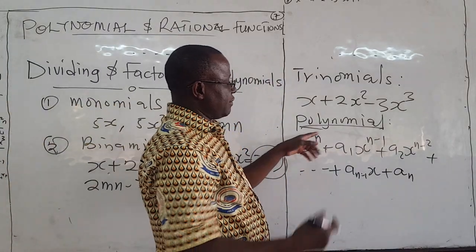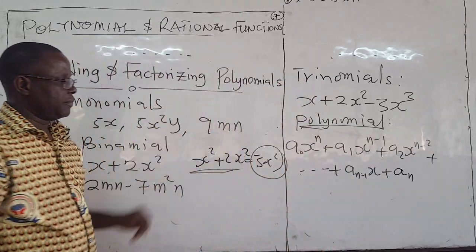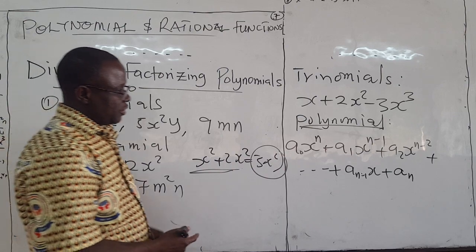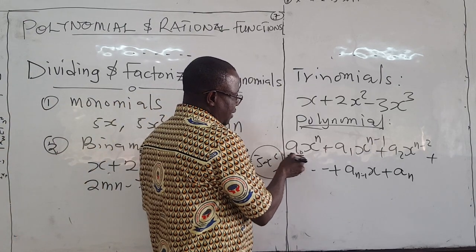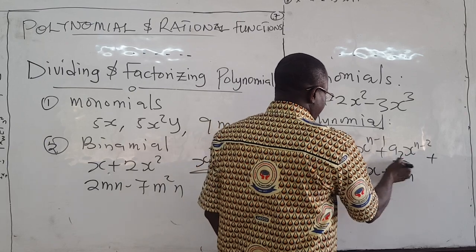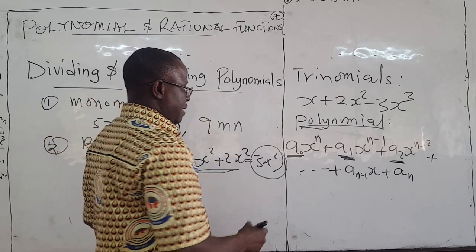You have n terms. It's a general form of all these other ones. These are the coefficients, the constants there, of the polynomial.